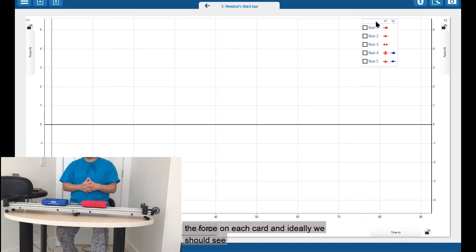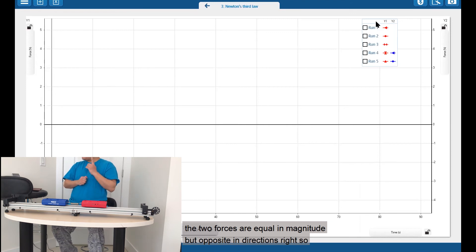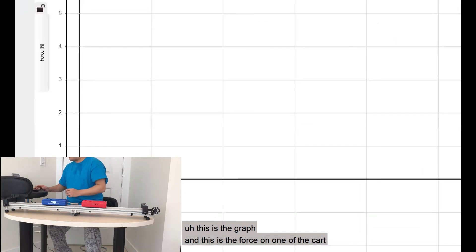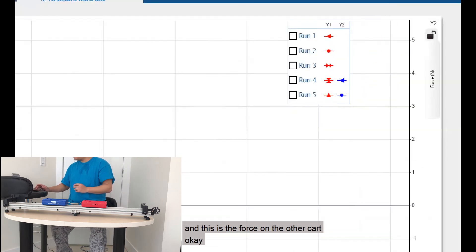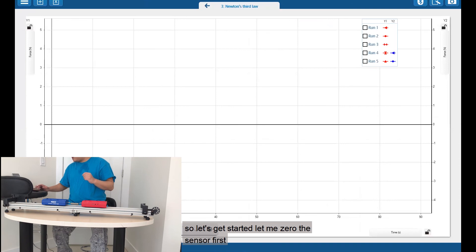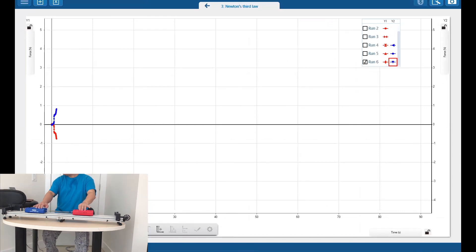And we can use the SparkView app to graph the force on each card. And ideally, we should see the two forces are equal in magnitude, but opposite in directions. So this is a graph. And this is the force on one of the cards. And this is the force on the other card. So let's get started. Let me zero the sensor first. Beautiful.